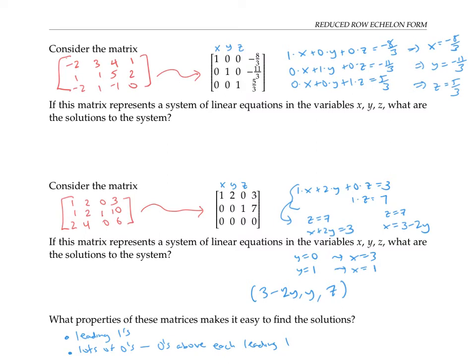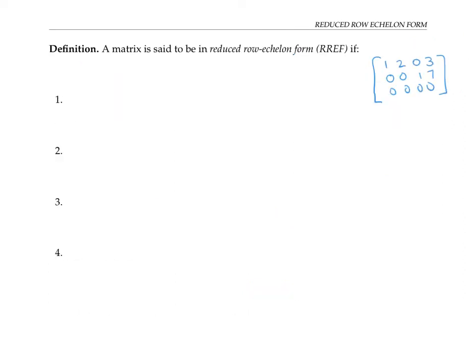Reduced row echelon form is the form of a matrix that makes it particularly easy to read off the solutions for its associated system of equations. A matrix is said to be in reduced row echelon form, abbreviated RREF, if: first, the first non-zero entry in each row that is not entirely zeros is the number one. These are called leading ones.